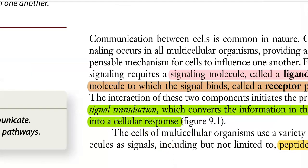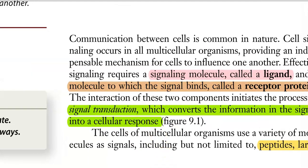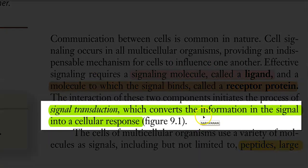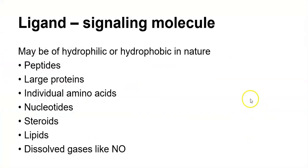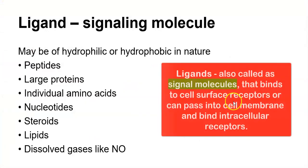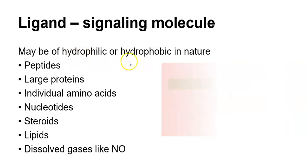Here is a simple definition for signal transduction: it refers to the conversion of information in the signal into a cellular response. Now, we look at a list of molecules that can act as a signaling molecule. These signaling molecules may be hydrophilic or hydrophobic in nature. They include peptides, large proteins, individual amino acids, nucleotides, steroid molecules, lipids, and sometimes even gases such as nitric oxide. They are all involved as signaling molecules in the process of signal transduction.